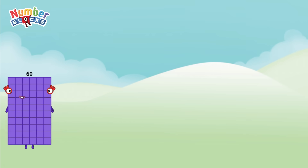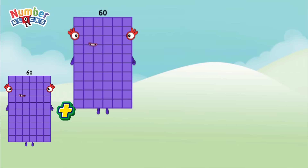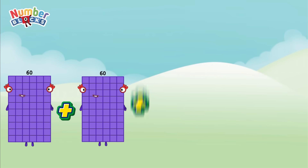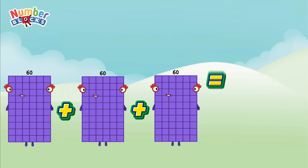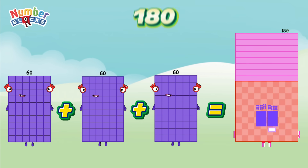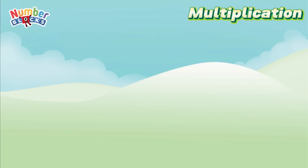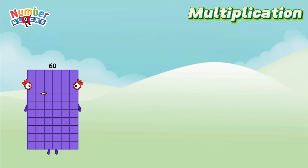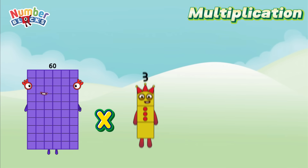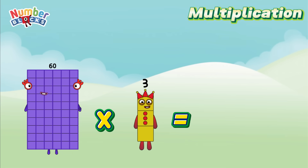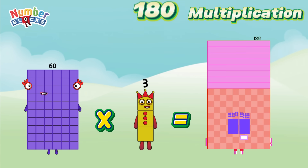60 plus 60 plus 60 is equals to 180. Multiplication: 60 multiplied by 3 is equals to 180.